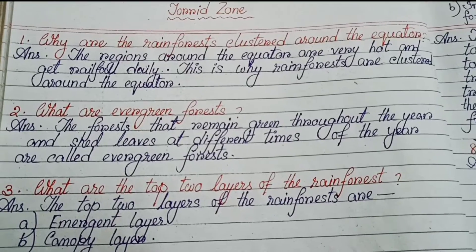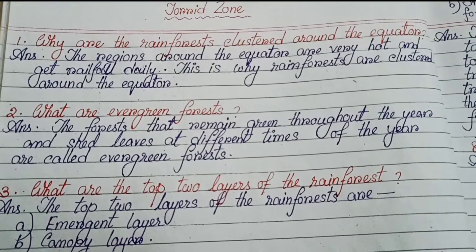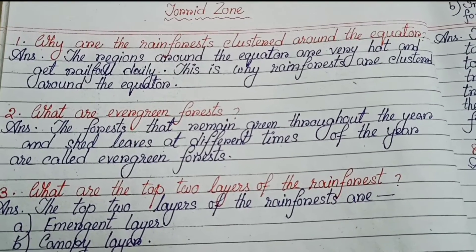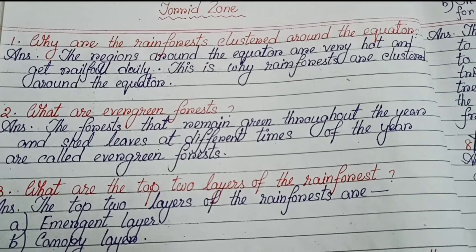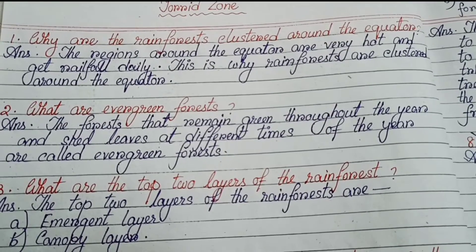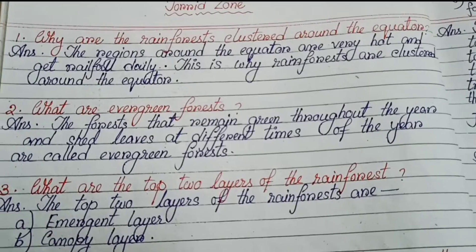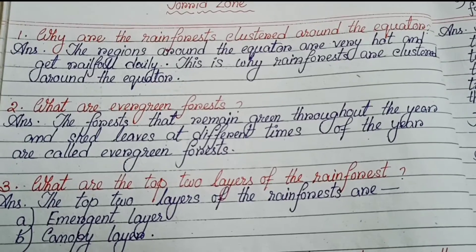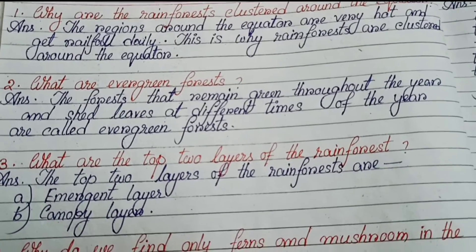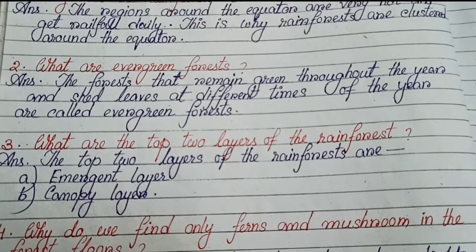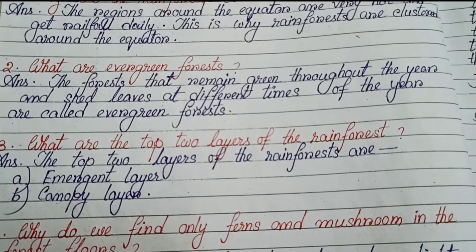Now we have some exercise question answers. Number 1: Why are the rainforests clustered around the equator? The regions around the equator are very hot and get rainfall daily. This is why rainforests are clustered around the equator.